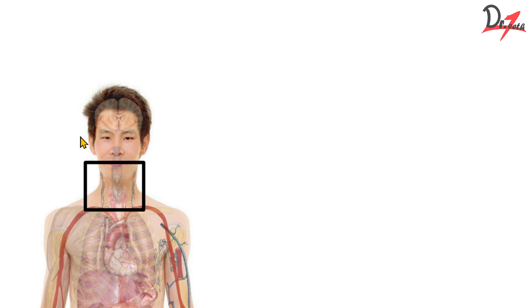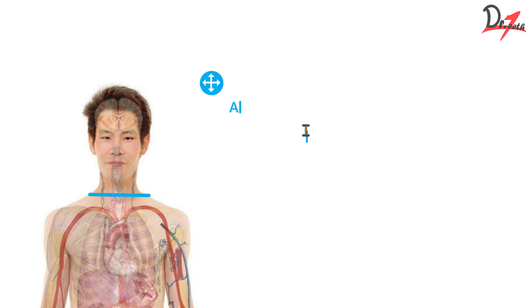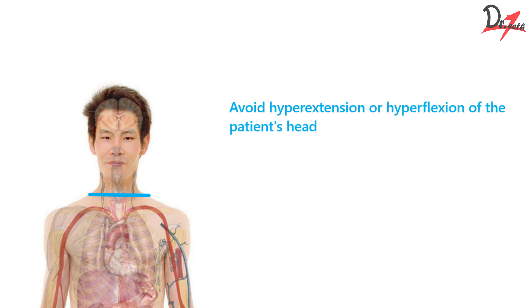Don't move the cervical spine — prevent movement of the cervical spine, especially in cases where we have blunt injuries above the clavicle level. We have to avoid hyperextension or hyperflexion of the patient's head. You can make the patient wear a hard cervical collar and support this region by a sandbag and tape. We have to position the patient properly and do cleaning of the injury, and check if there is any obstruction in the patient's airway due to any foreign body or bone injury.